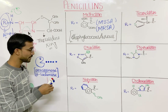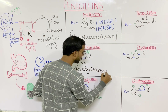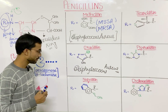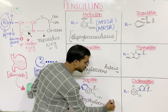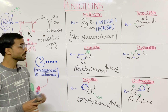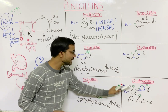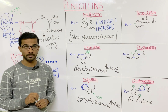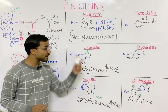Next is oxacillin, which is most importantly used against Staphylococcus aureus. Nafcillin and dicloxacillin are also used against Staphylococcus aureus. So methicillin, oxacillin, nafcillin, and dicloxacillin are basically anti-Staphylococcus aureus penicillins. These will be used against Staphylococcus aureus, which is a most important and dangerous bacterium not destroyed by penicillin G, penicillin V, amoxicillin, or ampicillin.